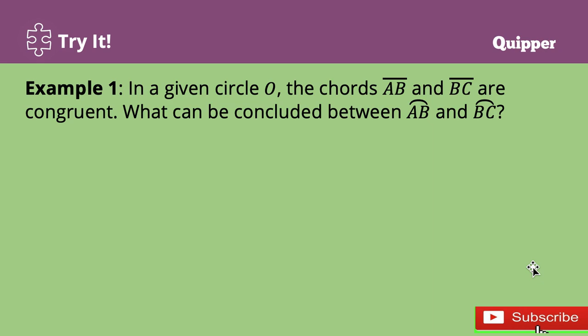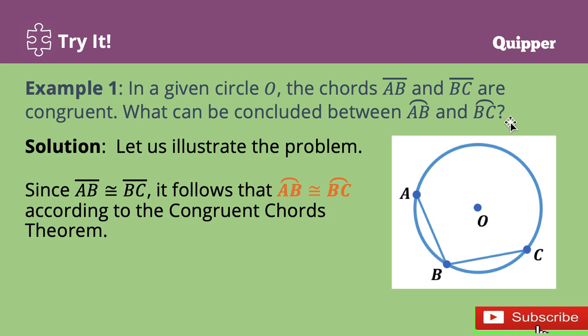Now let's try some examples about the relationships between chords and arcs. Number one: in a given circle O, the chords line segment AB and line segment BC are congruent. What can be concluded between arc AB and arc BC? As we observe, we have a common point, which is point B. This is the common point for the two chords. Now we want to know what must be concluded between arc AB and arc BC. To illustrate, we have this.